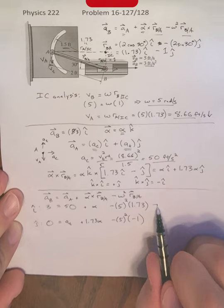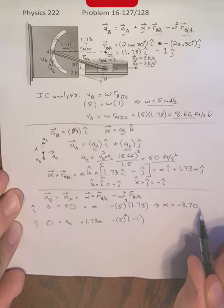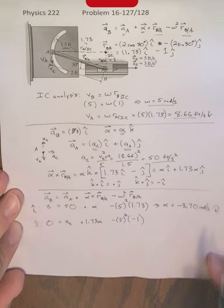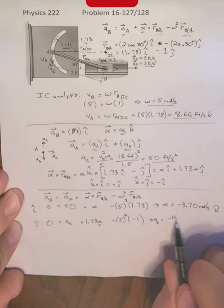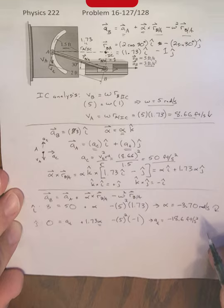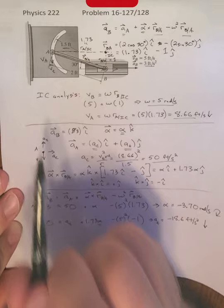We can take the first one. This gives us that alpha is equal to negative 3.7 radians per second. The fact that it's negative means that that angular acceleration is going clockwise. Plugging that value back into here allows us to solve for the tangential component of that acceleration. And that is going to give me negative 18.6 feet per second squared. Notice we assume it's positive. So the fact that it's negative means its acceleration is downward. So point A is speeding up as it's moving here.